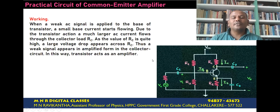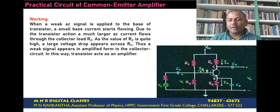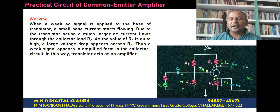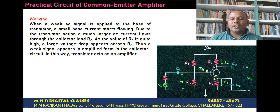Let us understand the working of this CE amplifier. When a weak signal is applied to the base of the transistor, a small base current passes through the input part of the circuit. Because of transistor action, a much larger collector current flows through the collector load resistance. As the value of RC is quite large, a large voltage drop appears across the collector resistance. Thus, a weak signal fed to the input circuit gets amplified in the form of collector-emitter voltage. In this way, the transistor acts as an amplifier.